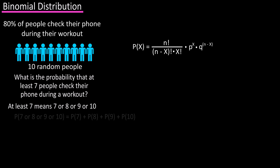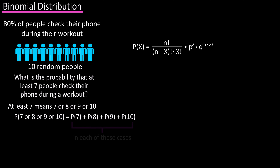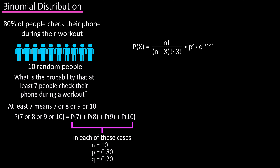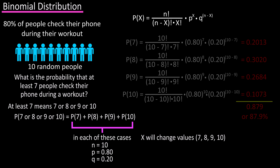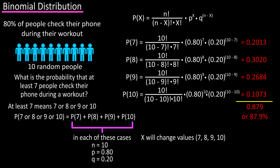In this case, we need to calculate the individual probabilities and add them up to get the total probability. In using the formula in each of these cases, n will be 10, p will be 0.80, q will be 0.20, and x will change values: 7, 8, 9, and 10. Adding these up, we get 0.879, or 87.9 percent.